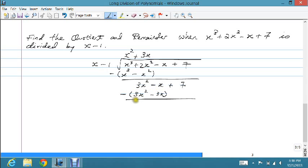The first term is gone. Second term, negative x minus negative 3x gives me 2x.